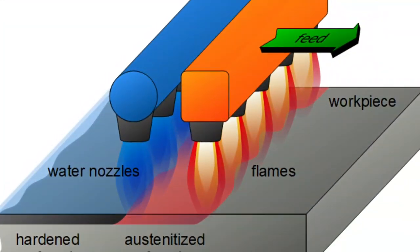The second type of quench hardening is flame hardening. By using oxy-acetylene gas, we heat the component by spraying the flame on the surface and then cool it by quenching. Flame hardening and induction hardening are similar in principle; both are quench hardening methods.